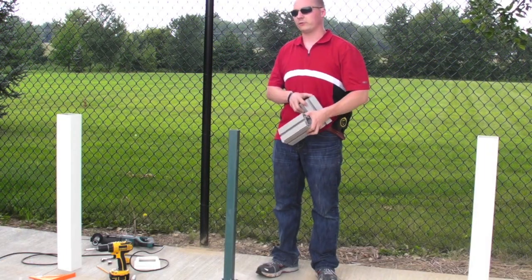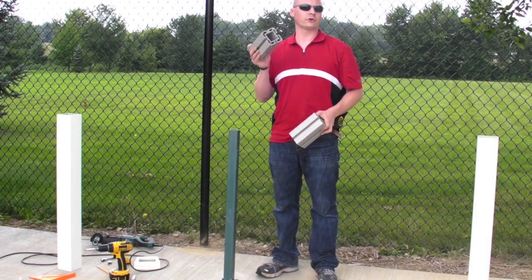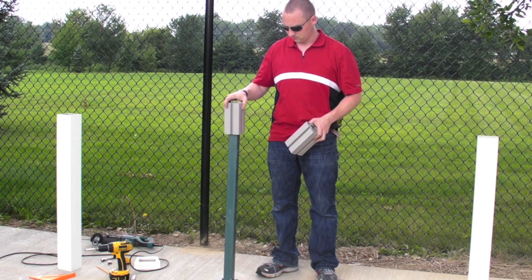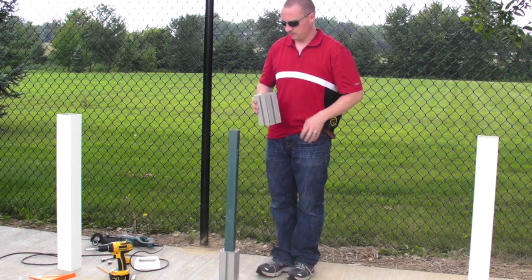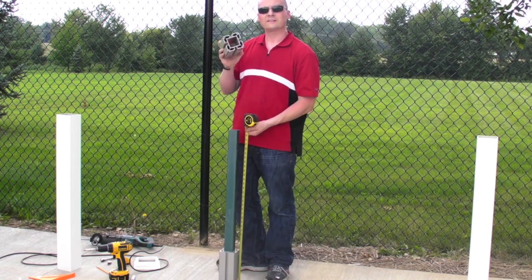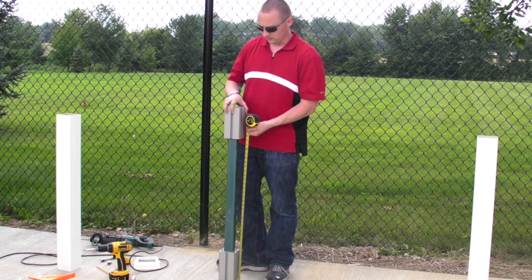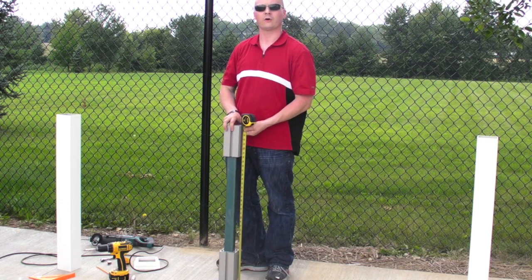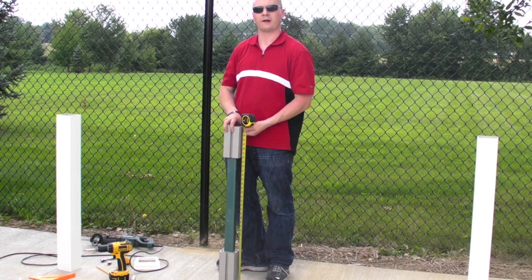After you have your concrete mount properly installed, you can go ahead and install your guide blocks. Take the top guide block and set it at the appropriate height for your railing and screw it tight using the provided screws.